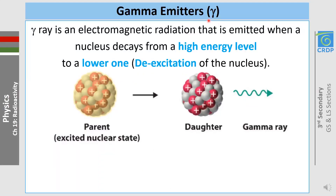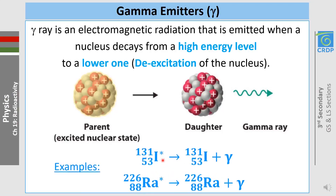Gamma emitters are symbolized by the Greek letter gamma. Gamma radiation is an electromagnetic radiation emitted when a nucleus decays from a high energy level to a lower one — we call this the de-excitation of the nucleus. Whenever a parent nucleus in the excited state decays to a lower energy level, it releases gamma radiation. For example, iodine in the excited state (indicated by a star) disintegrates to more stable iodine releasing gamma. Similarly, radium in the excited state disintegrates to a more stable state releasing gamma.